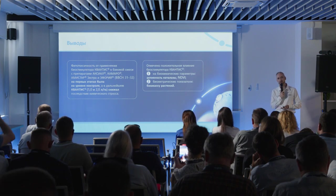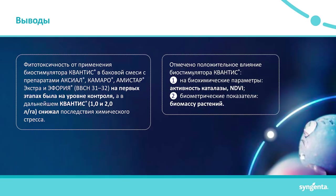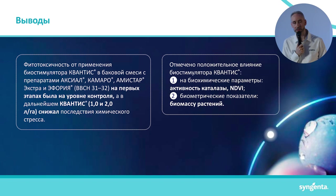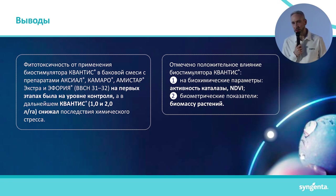Preliminary conclusions I can draw now: joint application of Kvantis biostimulant with herbicides, fungicides, and insecticides in tank mix at the early stages of wheat development reduced chemical stress, had a positive effect on biochemical parameters — catalase activity and chloroplast activity assessed via NDVI — and also influenced plant biomass accumulation. Going forward, we are of course interested in yield — the combine hopper will show us.